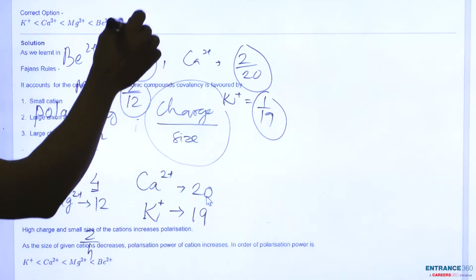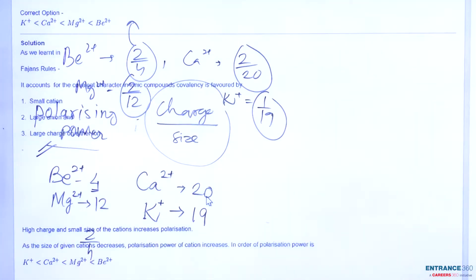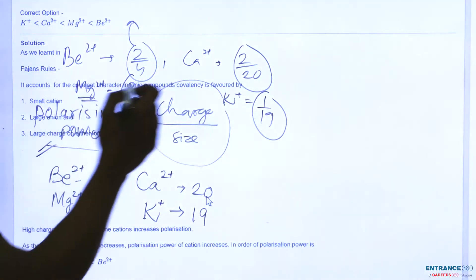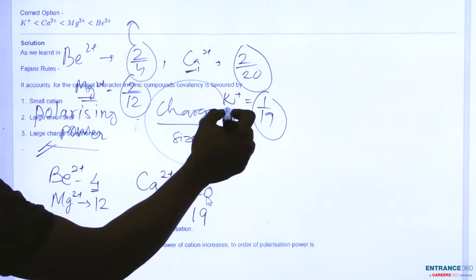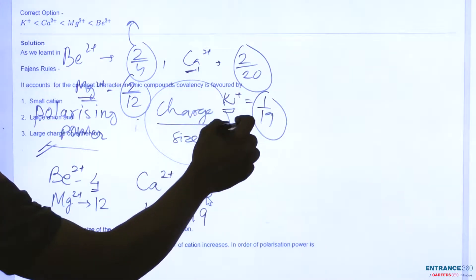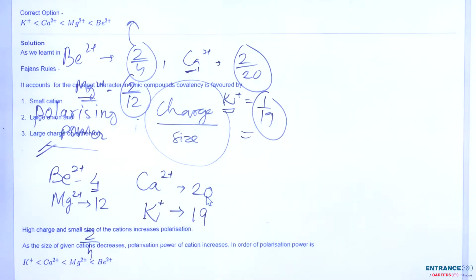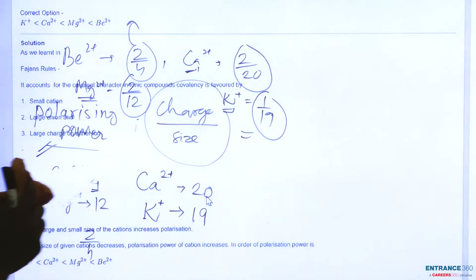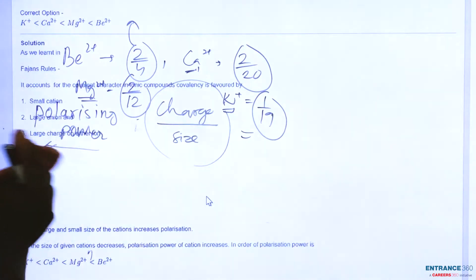So the larger value is this one. So beryllium 2+ has the highest polarizing power among these options. Next one will be magnesium 2+ followed by calcium 2+ and potassium plus ion.